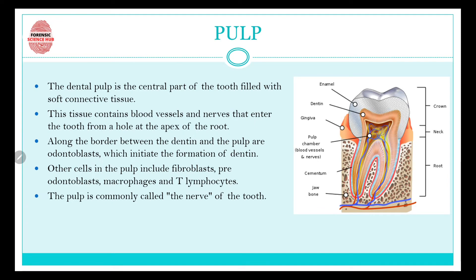Next, let's talk about the pulp area. The dental pulp is the central part of the tooth that is filled with soft connective tissue. This is the pulp chamber. It has blood vessels and nerves that enter the tooth from a hole at the apex of the root. Blood vessels travel from this hole and enter into the pulp chamber. Along the border between the dentine and the pulp are odontoblast cells, which initiate the formation of dentine.